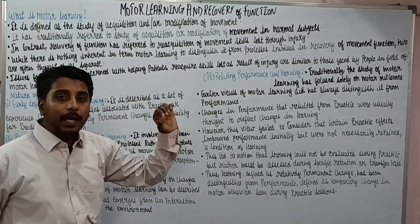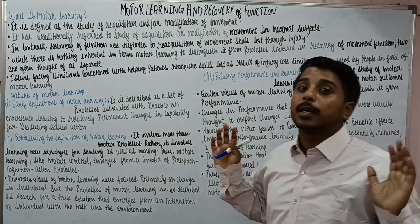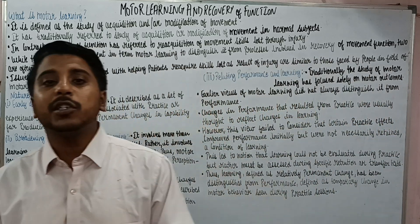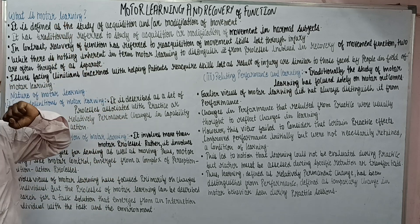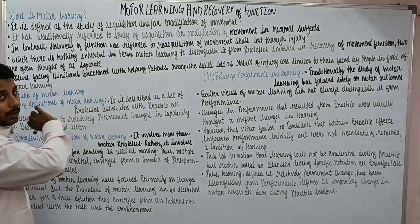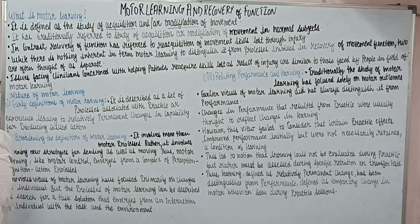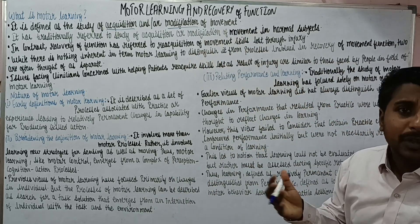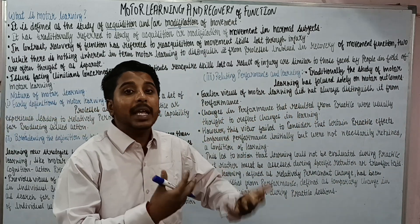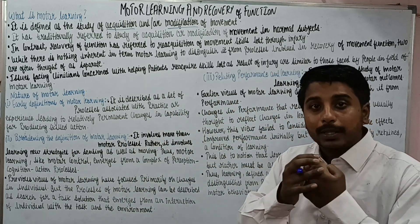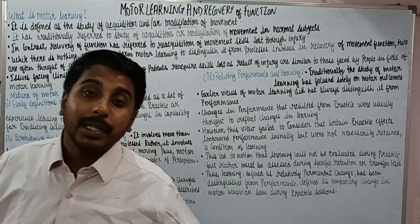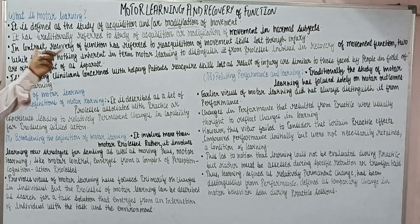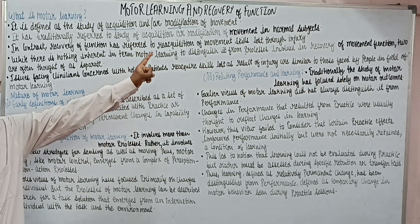What is Motor Learning? Here we are going to understand how movement is learned by our body. Previously we studied how movement is controlled and how it occurs efficiently in our body joints. Motor learning is the process or the study of acquisition or modification of movement — either how we acquire the movement or modify it. It has traditionally referred to the study of acquisition or modification of movement in normal subjects.